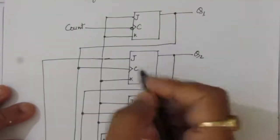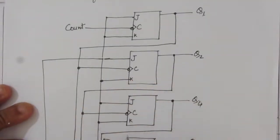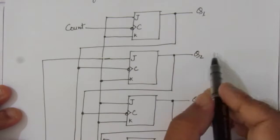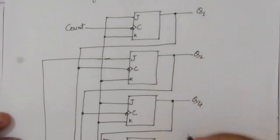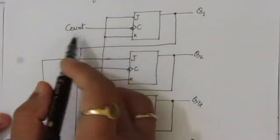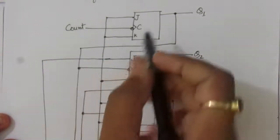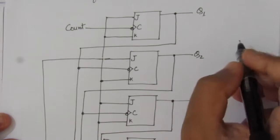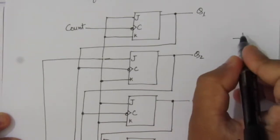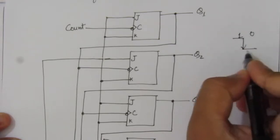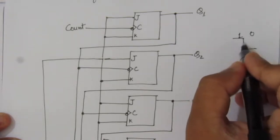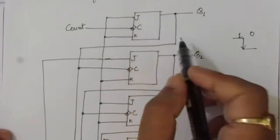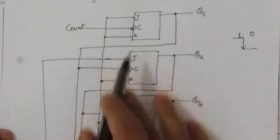This is the BCD counter circuit. It uses negative edge-triggered JK flip-flops, with outputs Q1, Q2, Q4, and Q8. The count input signal drives these flip-flops, which respond to a negative edge — that is, a one-to-zero transition. Only when a negative edge appears at the clock input will the flip-flops respond to their inputs and update their outputs.